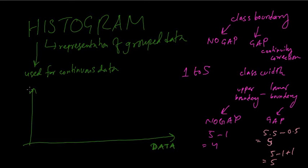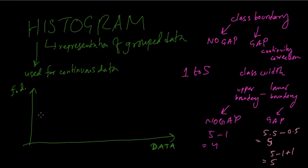The y-axis of the histogram is not the frequency, but the frequency density. This is the special rule of histogram: the height of the histogram is not the frequency, but the frequency density.